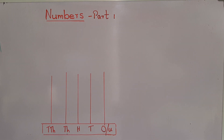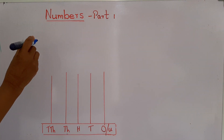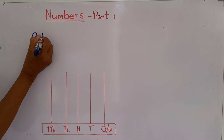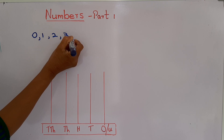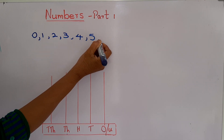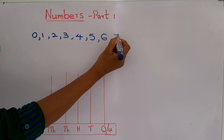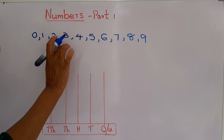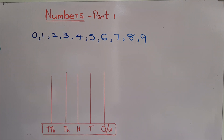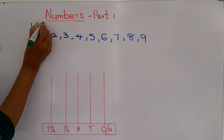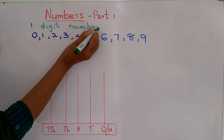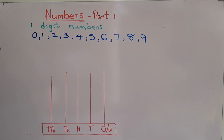I will write the first 10 numbers on the board: 0, 1, 2, 3, 4, 5, 6, 7, 8, 9. These are the first 10 numbers. We introduce these as one-digit numbers. What are they? One-digit numbers.